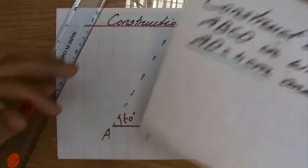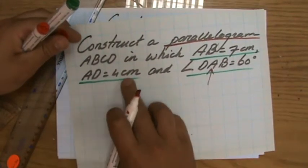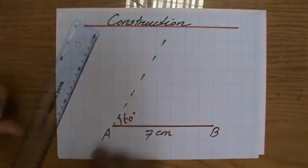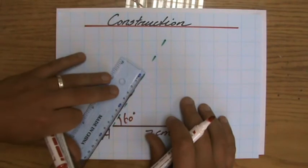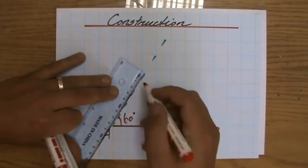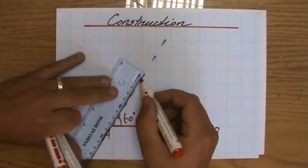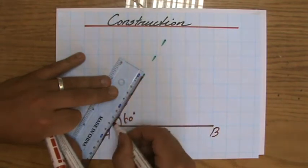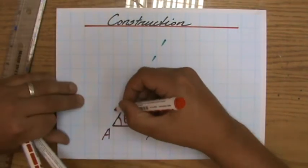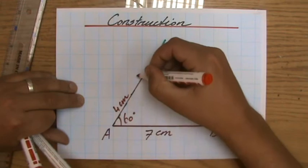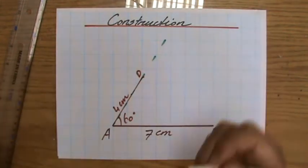They say that AD, the length of A to D, is 4 centimeters. So again, now I can take my ruler, measure 4 centimeters in a 60 degree angle. There we go, 4 centimeters, and that is point D over there. Beautiful.